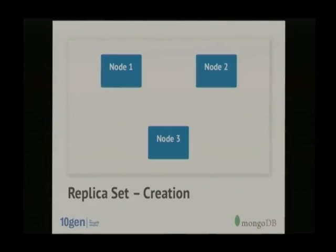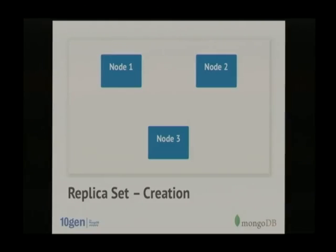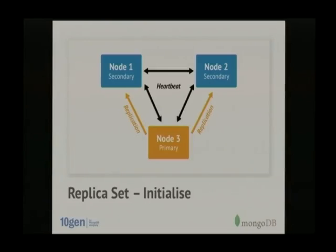This is the replica set lifecycle. The minimum replica set that makes sense is a three-node set. This basically works on a quorum basis — with three nodes, you need at least half the nodes available. When you create a replica set, you have a primary, one or more secondaries which replicate from the primary, and a heartbeat between all the nodes that makes sure they're actually available.